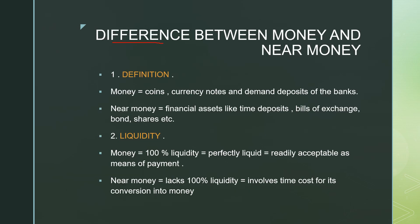Now, what is the difference between near money and money? First, by definition: money consists of coins, currency notes, and demand deposits of banks, while near money consists of financial assets like time deposits, bonds, shares, and so on. Second, liquidity: money has 100% liquidity — it is perfectly liquid and readily accepted as legal tender. Near money lacks 100% liquidity but is still a highly liquid asset. Converting near money to money proper may involve some time and cost.